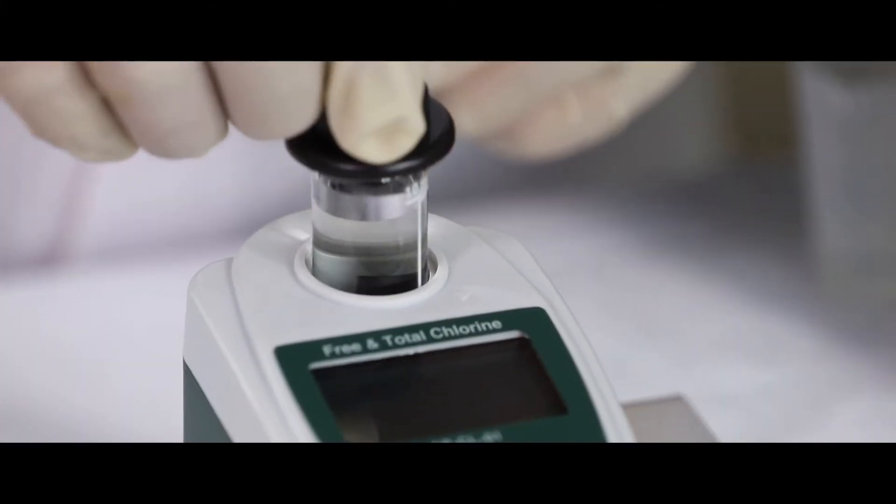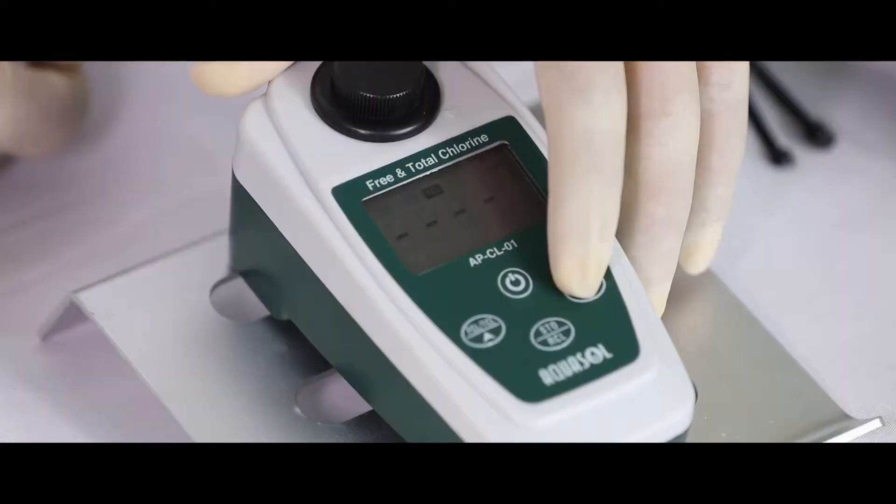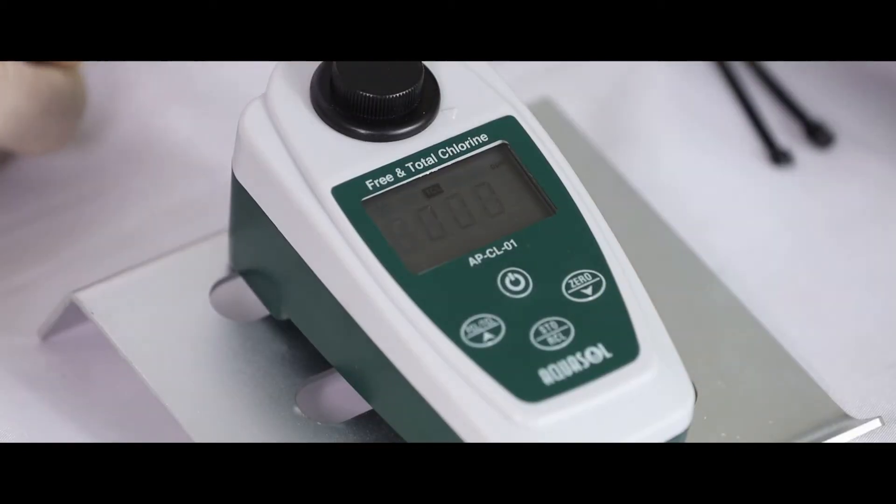Align the line on the bottle with the arrow on the meter. Press 0 key for calibration.